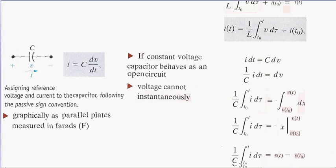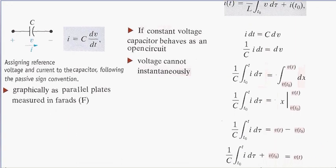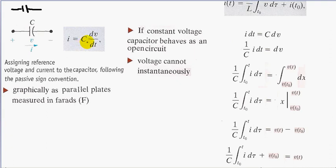Now we'll do the same thing to find the voltage relationship of a capacitor. A capacitor is symbolized by two parallel plates, measured in Farads. Sometimes in other books you might see capacitors written in different forms — these are the same thing. Using our passive sign convention, we have the voltage plus here, minus here, and our current going from plus to minus. The current through a capacitor is equal to C (capacitance) times dV/dt.